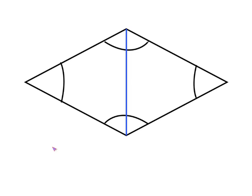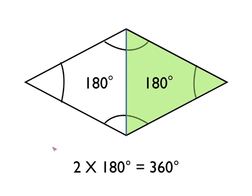Now we've already learned the angle rule that angles in a triangle add up to 180 degrees. So in the green shaded triangle here, the angles must add up to 180 degrees. And in the other triangle, those angles must also add up to 180 degrees. Since the quadrilateral is made up of both triangles, two lots of 180 degrees make up the 360 degrees in this quadrilateral.